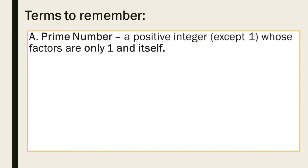Letter A, we have prime numbers. A prime number is defined as a positive integer, except for one, whose factors are only one and itself. Looking at the examples, we have 5, 13, and 127. If we need to find the factors of 5, we choose two numbers that when multiplied give 5 — that is 1 and 5, because 1 multiplied by 5 is 5. We're only using positive integers. So aside from that, there are no other factors for 5. Same with 13: the two positive integers are 1 and 13 to get a product of 13.